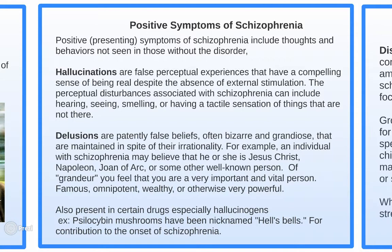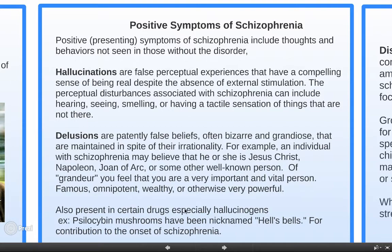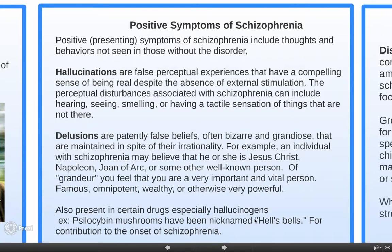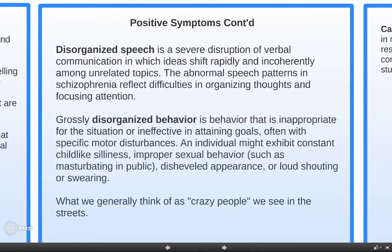Delusions can include believing you are Jesus Christ, Joan of Arc, Napoleon, or some other well-known person, or feeling you are a very important, vital, omnipotent, or wealthy person. In A Beautiful Mind, the main character suffers from delusions of grandeur, believing he is important for breaking a Russian code. Schizophrenia-like symptoms are also present with certain drugs, especially hallucinogens. Psilocybin mushrooms have been nicknamed 'Hell's bells' for their contribution to the onset of schizophrenia.